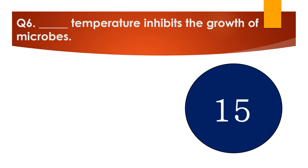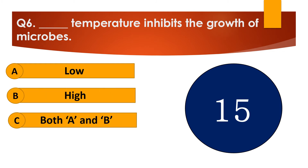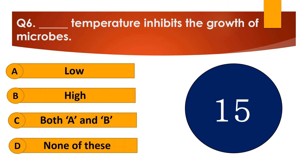Question number 6. Dash temperature inhibits the growth of microbes. The options are: A. Low, B. High, C. Both A and B, or D. None of these.